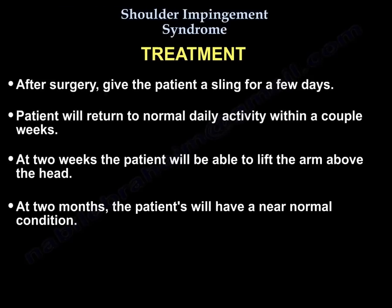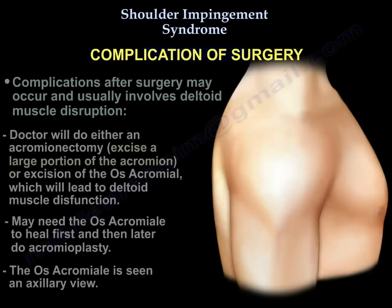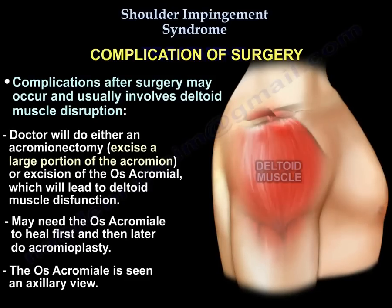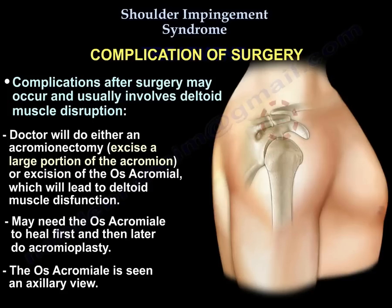After surgery, the patient is given a sling for a few days and returns to normal daily activity in one to two weeks. At two weeks the patient can lift the arm up, and at two months the patient will be near normal. Complications can happen, usually involving the deltoid — deltoid disruption. If the surgeon excises too large a part of the acromion or removes an os acromiale, that can lead to deltoid dysfunction. With an os acromiale, you may want to let it heal first and then perform the acromioplasty later. The os acromiale is typically visible on X-ray.